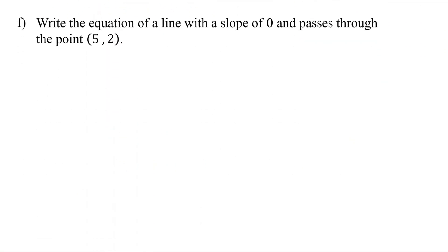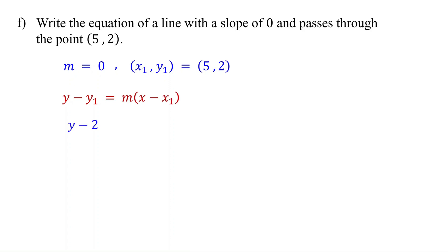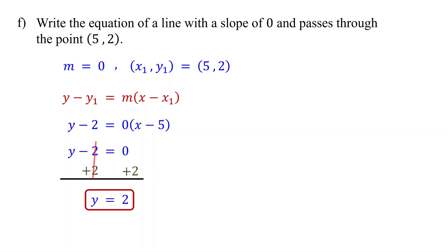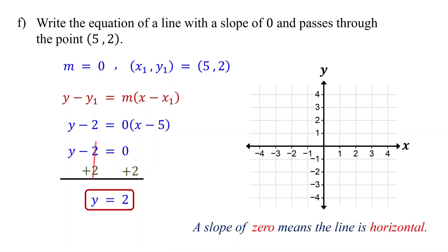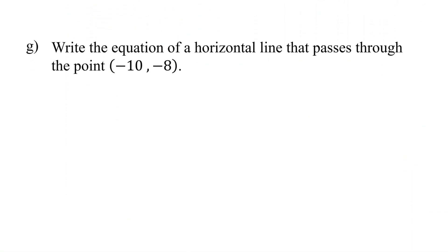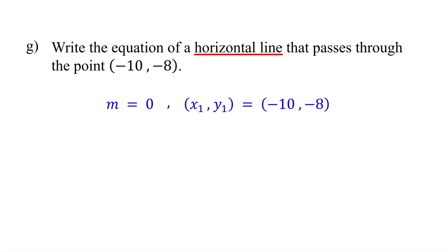What if the slope is 0? Replace y1 with 2, m with 0, and x1 with 5. Since 0 times any number is 0, the right side becomes 0, so the equation of the line is y equals 2. This means y is always 2 no matter the value of x. A slope of 0 means the line is horizontal, so y equals 2 represents a horizontal line crossing the y-axis at 2. In general, if the slope is 0, the equation is y equals the y-coordinate of the given point. For example, a horizontal line through (negative 10, negative 8) gives y equals negative 8.